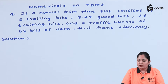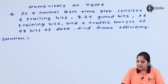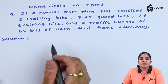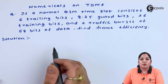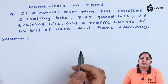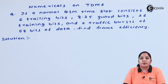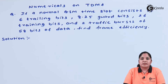The next numerical on TDMA: if a normal GSM time slot consists of 6 trailing bits, 8.25 guard bits, 26 training bits, and 2 traffic bursts of 58 bits, find the frame efficiency. First we find how many bits are in one time slot by summing the trailing bits, training bits, guard bits, and traffic bursts.